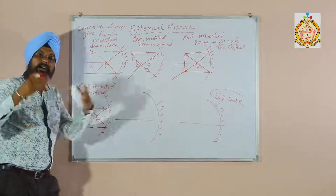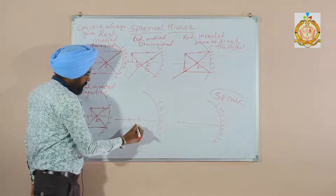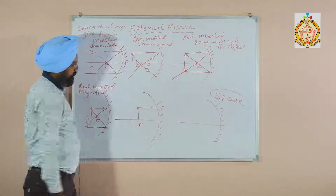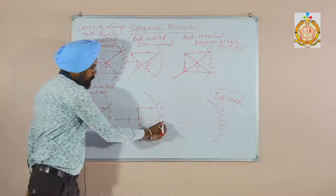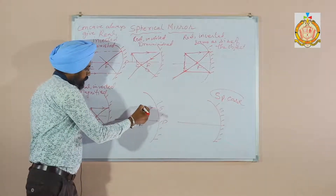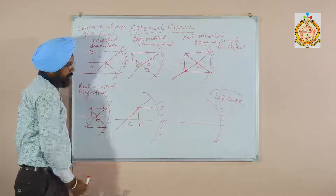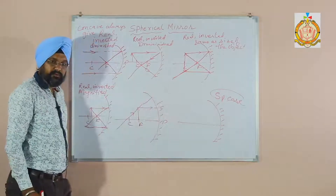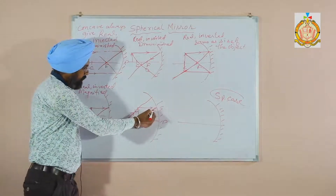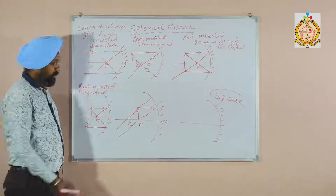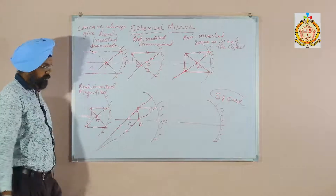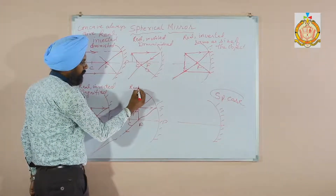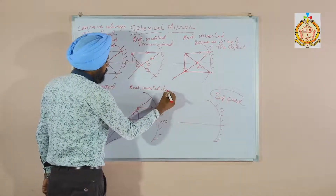The fifth case: the object is at the focus point F. One ray is parallel to the principal axis; the other can pass through the center of curvature. The ray passing through the center of curvature comes back along the same path, and the other ray reflected goes parallel after passing through the focus. These rays will meet at a very far point. Characteristics: real, inverted, and highly magnified.